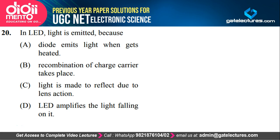They are asking in an LED why light is emitted. The principle of LED involves a depletion region, and due to recombination of charge carriers, photons are emitted. Those photons are responsible for light emission. So light is emitted because of recombination of charge carriers — the correct option is B.